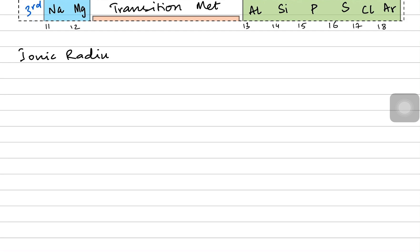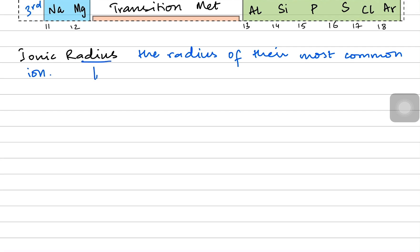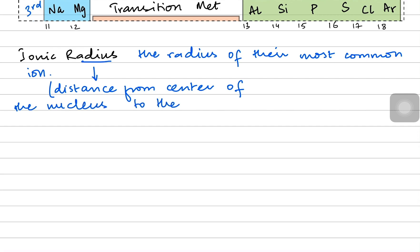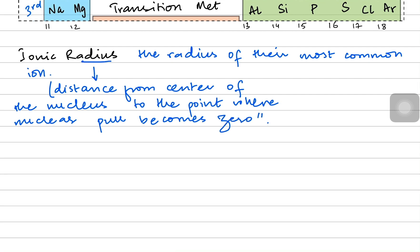Continuing with the ionic radius — we should know what that means. It means the radius of the most common ion produced by the atom. The radius is the distance from the center of the nucleus towards the region where nuclear pull is almost zero. Because there is no fixed track, you can't measure the radius precisely, and that is the definition of ionic radius.